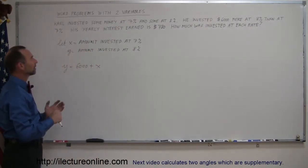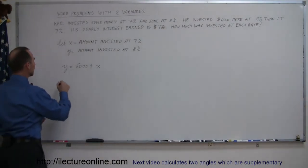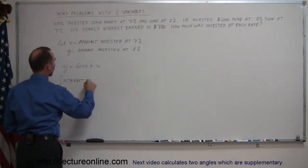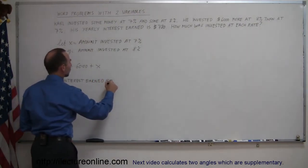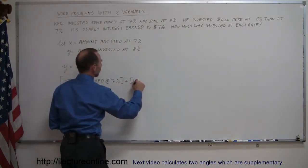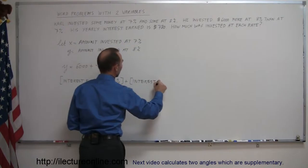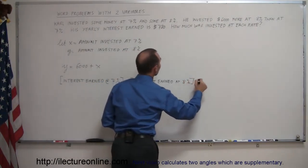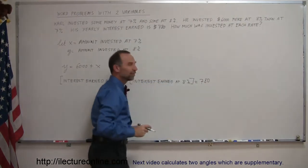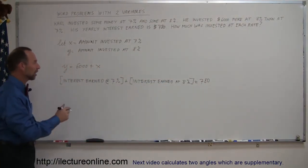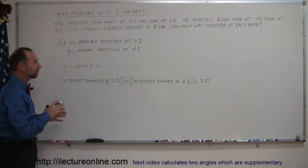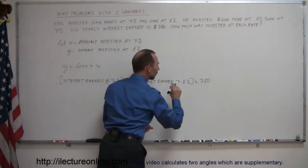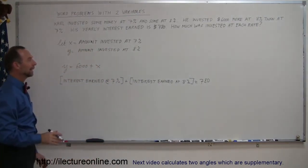In addition, the yearly interest earned was $780, which means the interest earned at 7% plus the interest earned at 8% must add up to $780. I write this out in English first because we're often tempted to jump straight to the equation and make mistakes. So I'd rather write it out simply: interest earned at 7% plus interest earned at 8% equals total interest for the year.